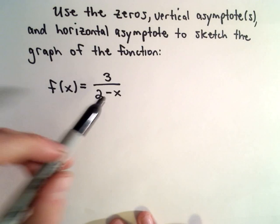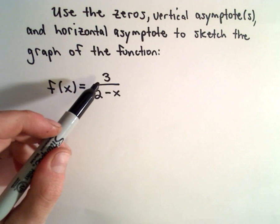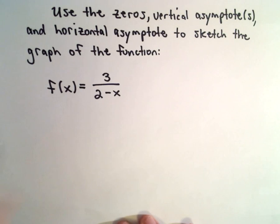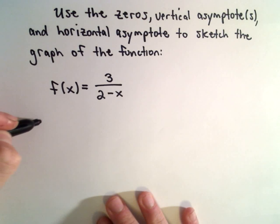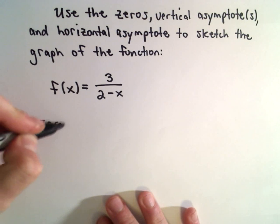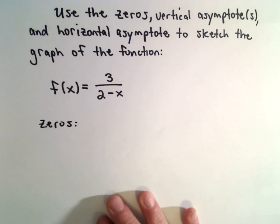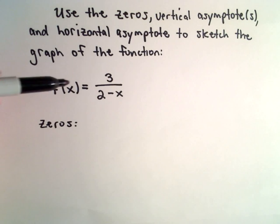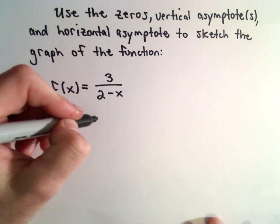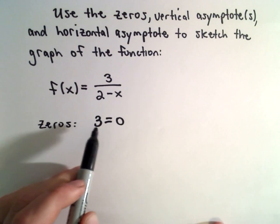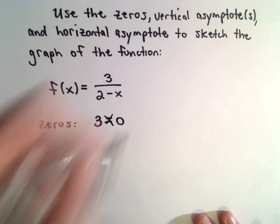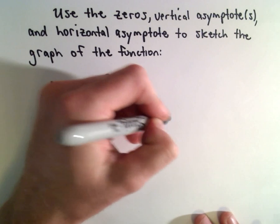So the first thing I would do for a rational function is try to factor the numerator and the denominator. In this case, there's no factoring to do, so that part's done for us. To find the zeros, we take the numerator, set it equal to 0, and solve. Well, in this case, 3 doesn't equal 0, so that tells us there are no zeros.